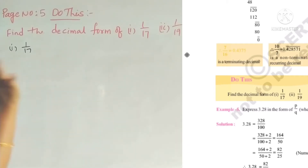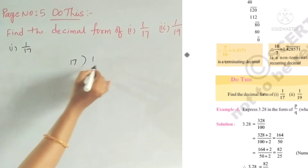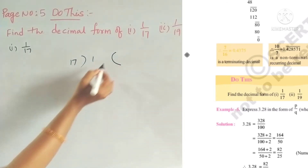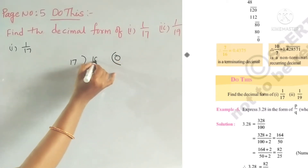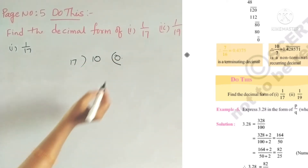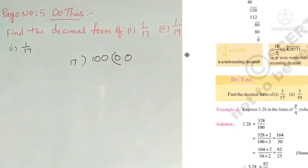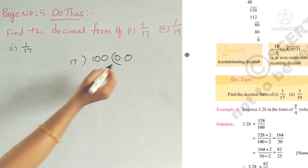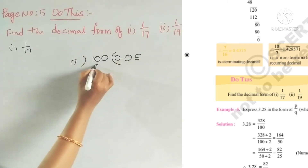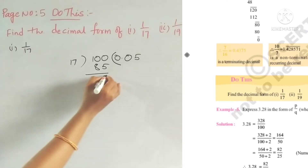This will be just division. So we start: 1 divided by 17. Since 1 is less than 17, we write 0 point. Then 10 divided by 17 is 0 again. So we get 100 divided by 17. 17 fives are 85. If we subtract 85 from 100, we get 15.